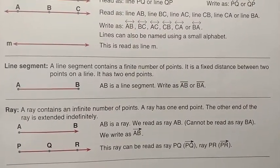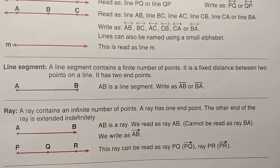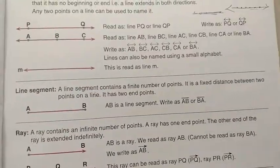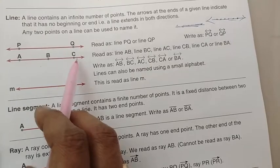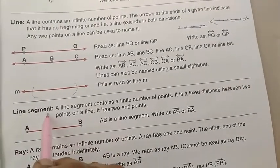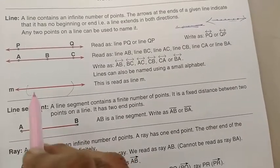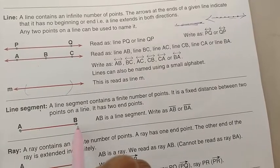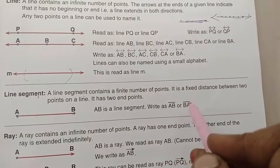Next, line segment. A line segment contains a finite number of points. It has a fixed distance between 2 points on a line. It has 2 end points. A line has no end points — both sides extend. The part of the line is called a line segment. A line segment has 2 end points. AB is a line segment, written as AB or BA.